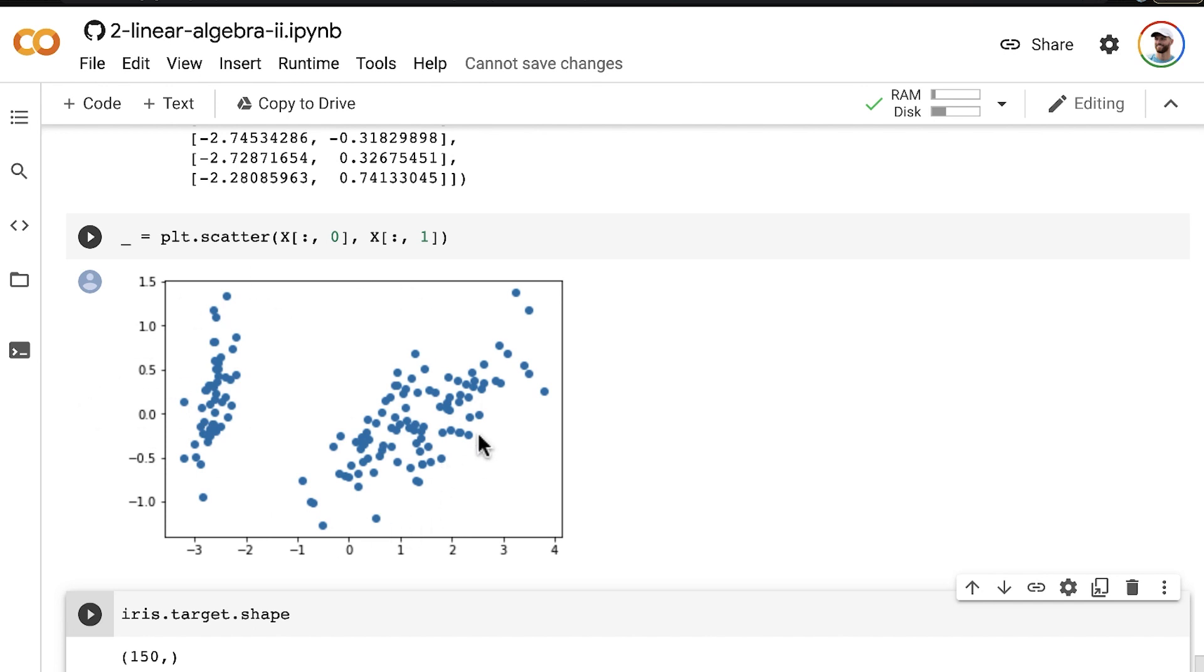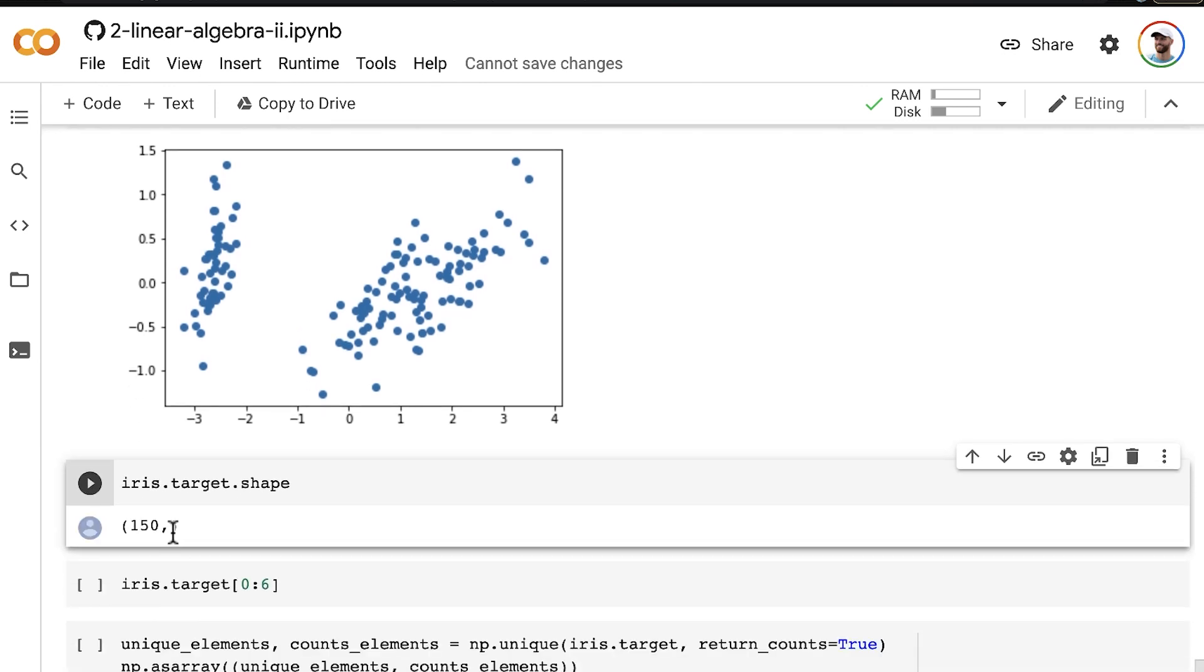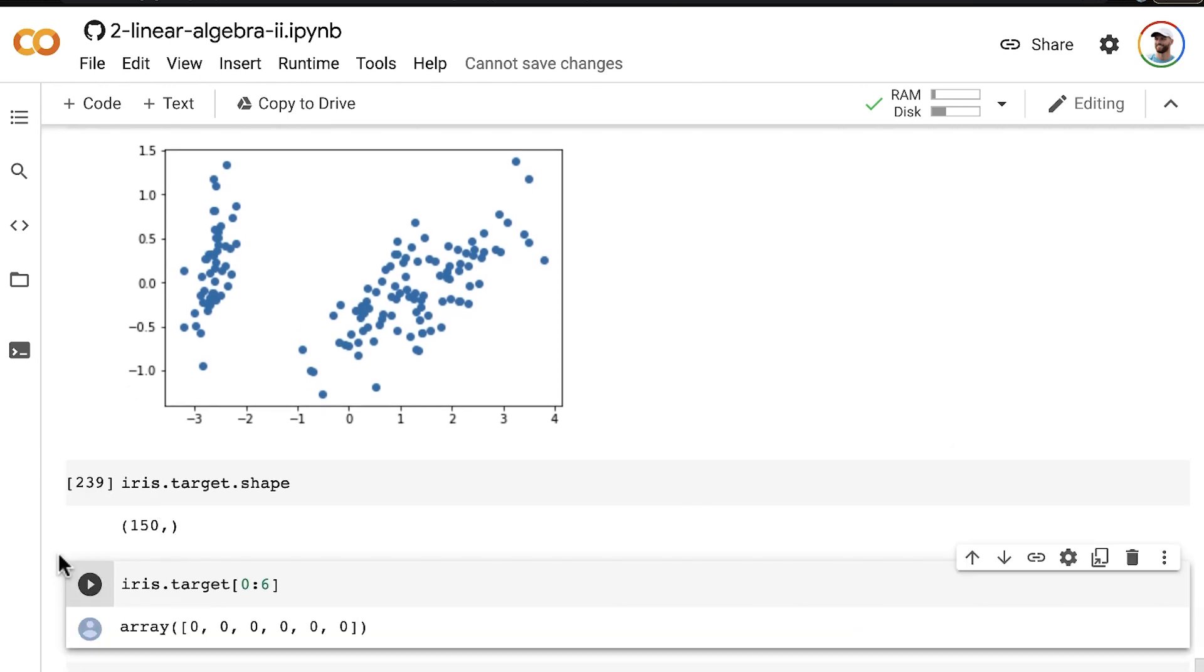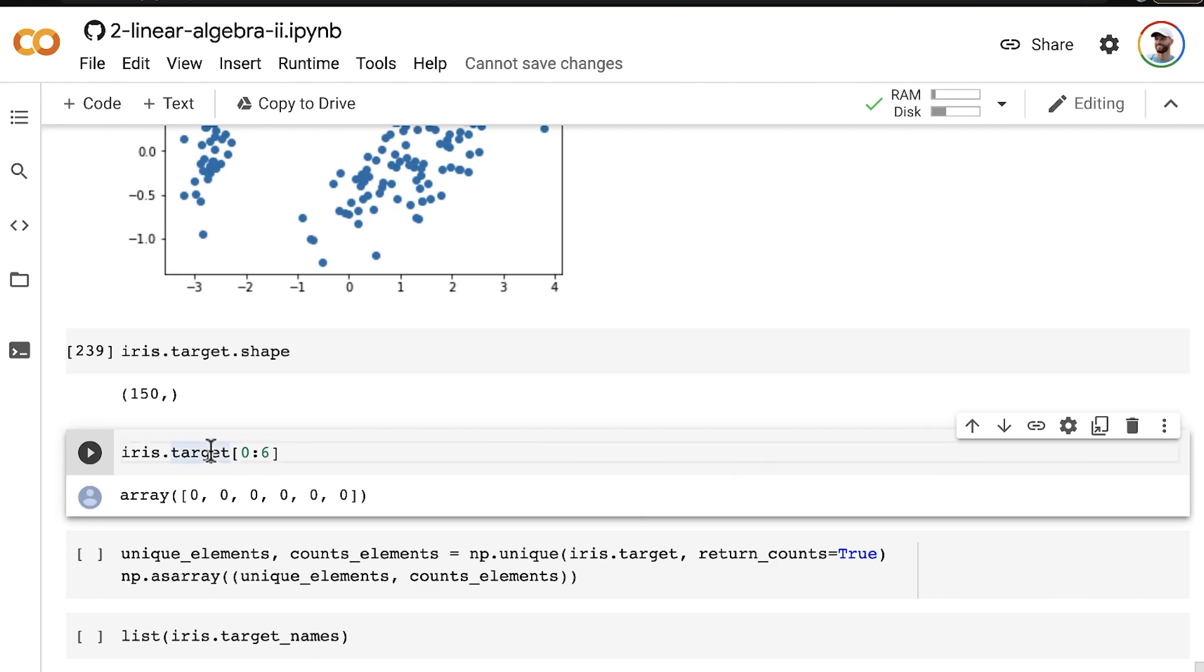But in fact, for our 150 irises, we do have a label, which is called a target here. A target because we could predict the label with our four features.